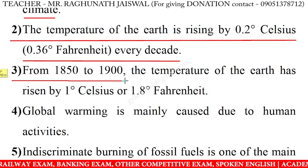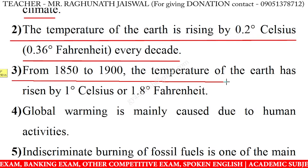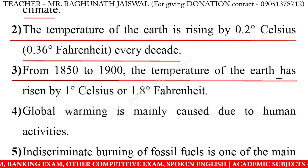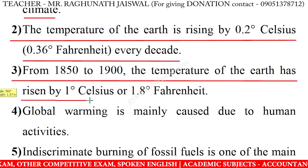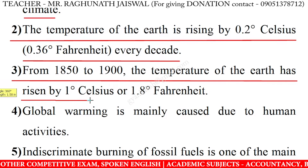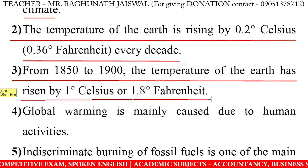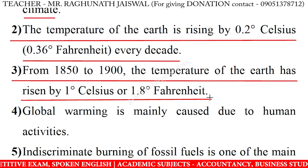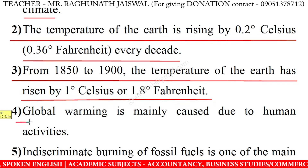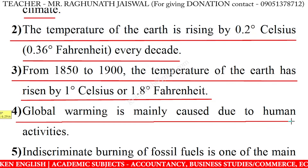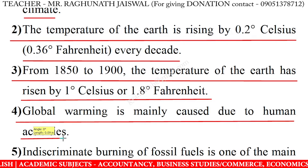From 1850 to 1900, the temperature of the Earth has been rising by 1 degree Celsius or 1.8 degrees Fahrenheit. Global warming is mainly caused due to human activities.